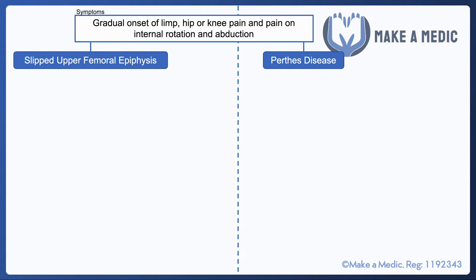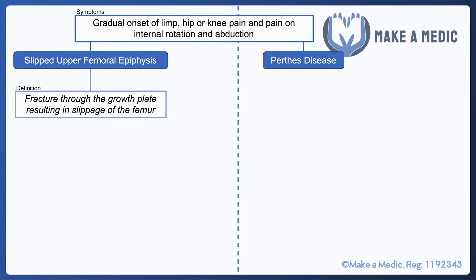So they both present with a gradual onset of a limp. There can be pain in the hip itself or pain referred to the knee, and there's usually pain on internal rotation and abduction.